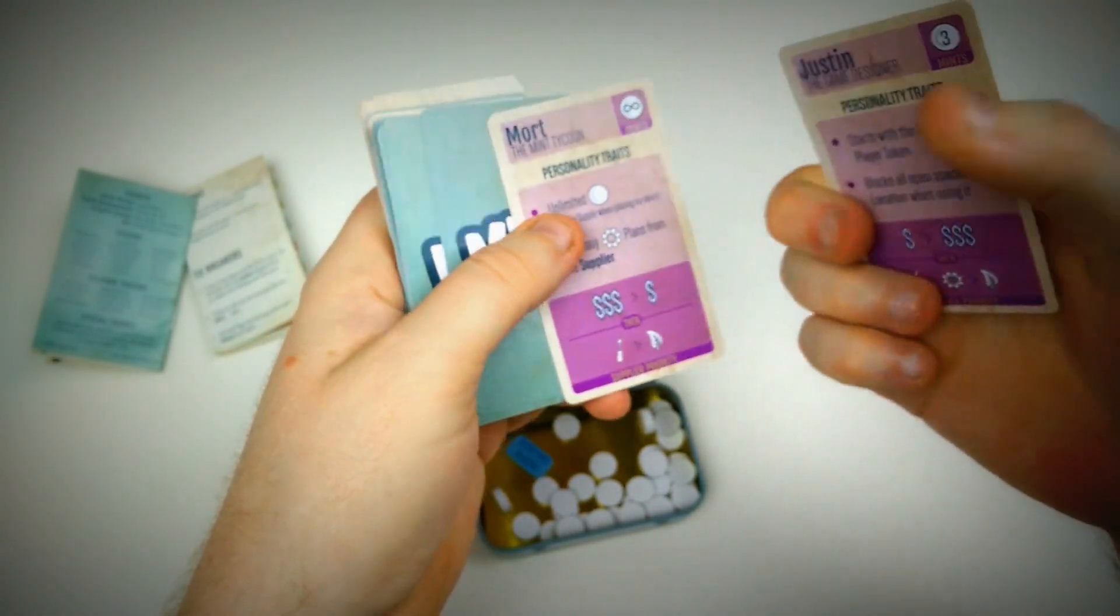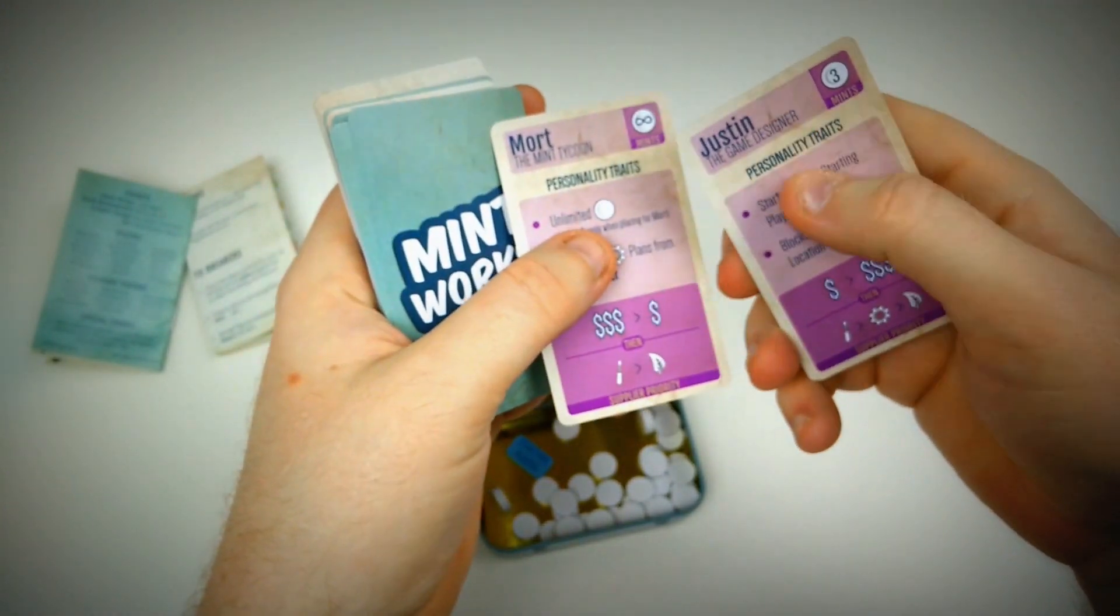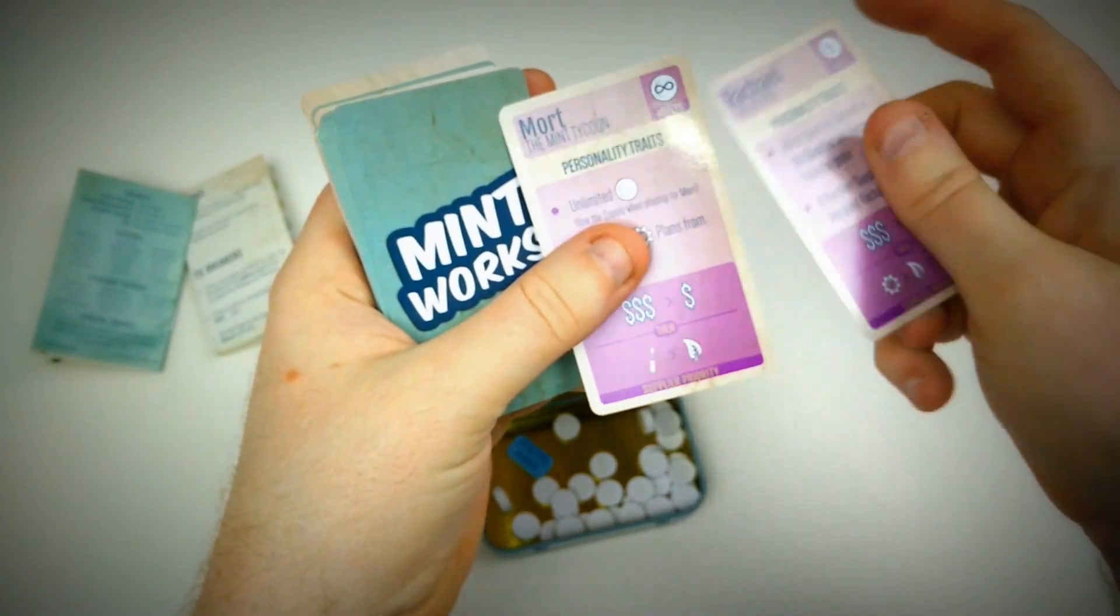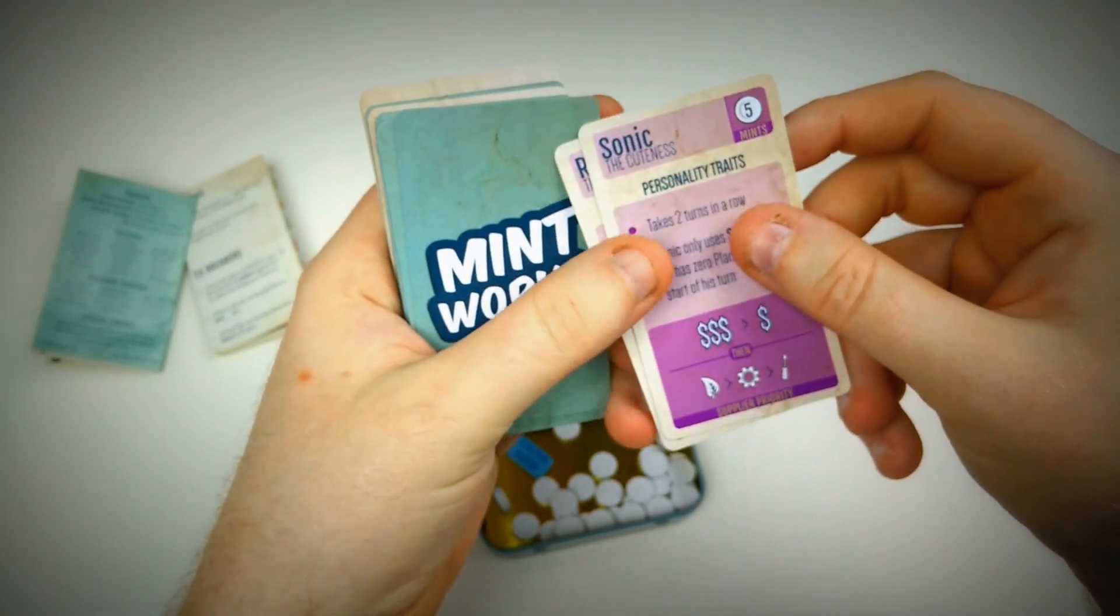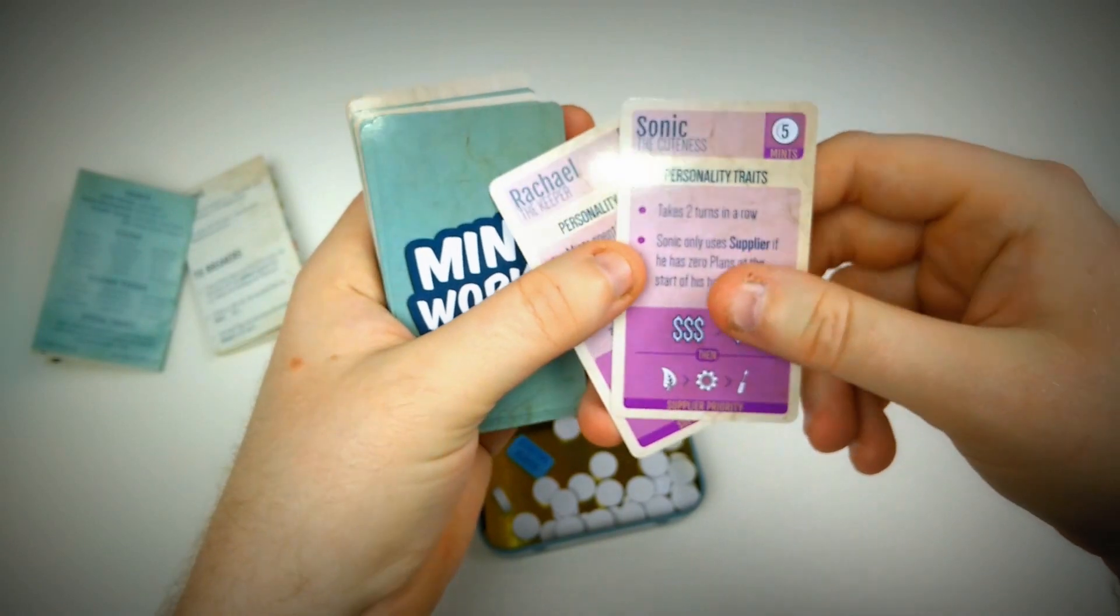So we have Justin the game designer, Rachel the keeper, Mort the mint tycoon, and Sonic the cuteness. No idea what they're for.